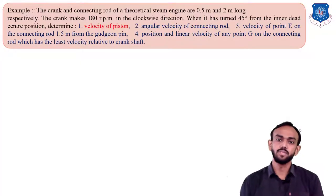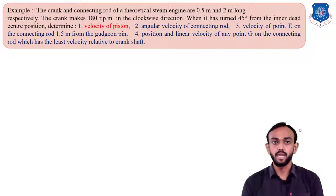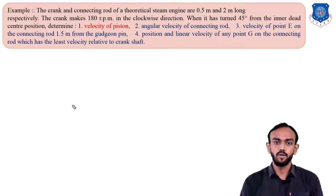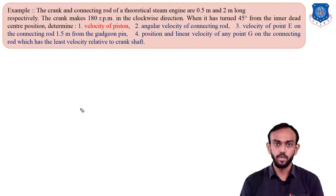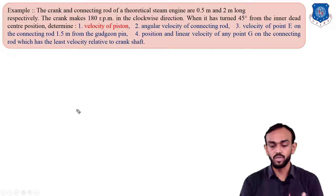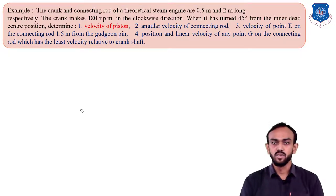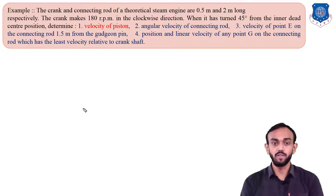As you can see on the screen, the given data: the crank and connecting rod of a theoretical steam engine are 0.5 meter and 2 meter long respectively. The crank is rotating at 180 RPM in a clockwise direction when it has turned 45 degrees from the inner dead center position. We need to find: the velocity of the piston, the angular velocity of the connecting rod, the velocity of point E on the connecting rod which is 1.5 meter from the gudgeon pin, and the position and velocity of point G on the connecting rod which has the least velocity relative to the crankshaft.